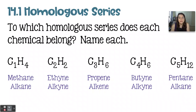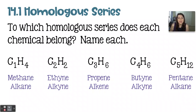In this case, N — the number of carbons — is one. Double that, you get two, add two and you're up to four. So that tells us that C1H4 would be a one-carbon molecule with all single bonds. Because it's an alkane, it would be methane.